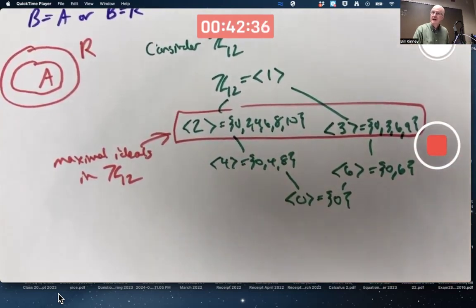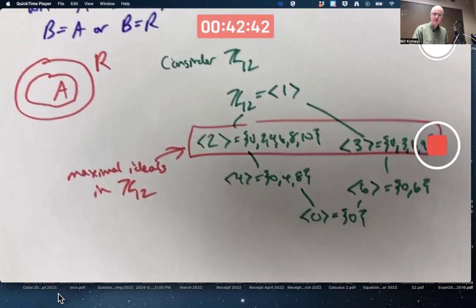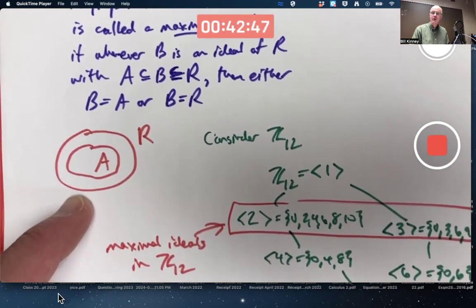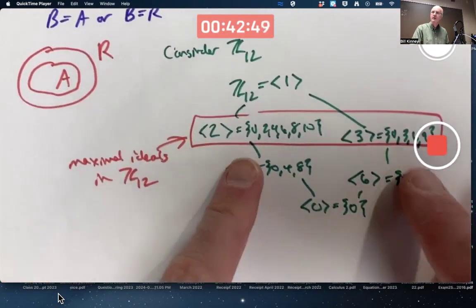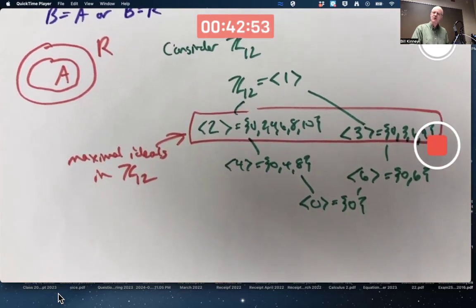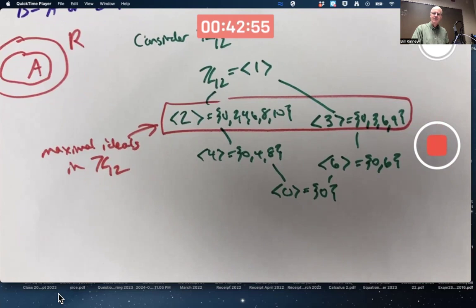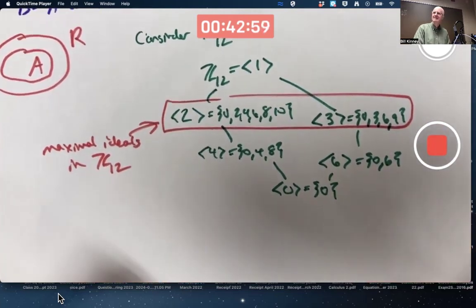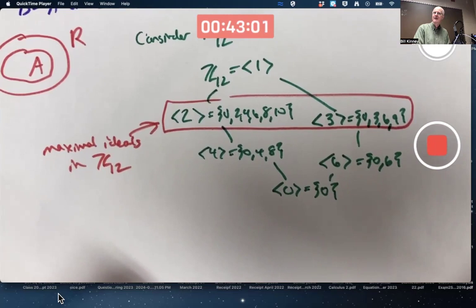Maximal ideals are not unique. That could be a misunderstanding that people might have is to think maximal ideals by this definition might be unique. But no, they're not necessarily unique. You can have more than one of them. Do you notice that two and three are prime, whereas four and six are not? Is that a coincidence? Maybe, maybe not.